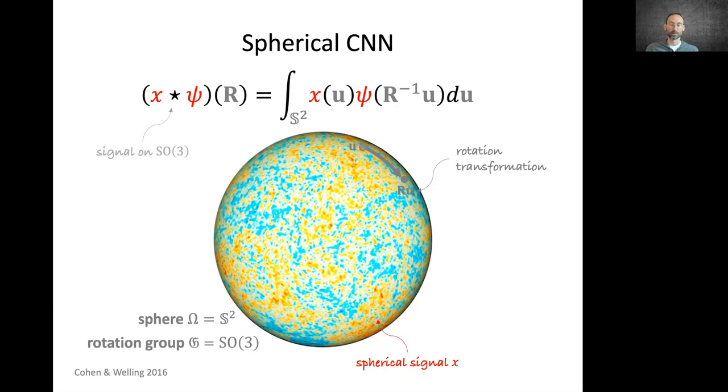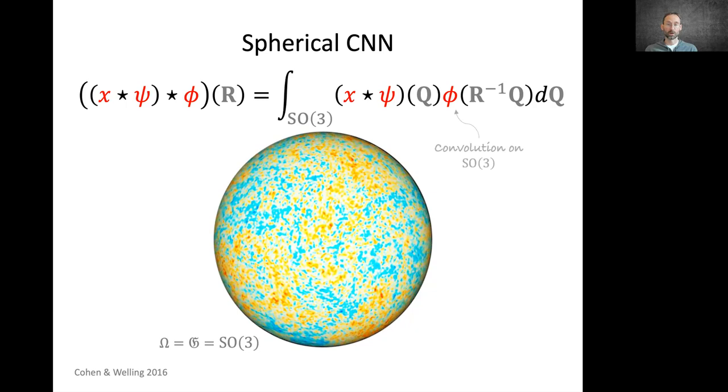As I said, this SO(3), it has a different structure, it's actually a three dimensional manifold, because on this sphere, we can rotate three ways, we can rotate along the parallels, along the meridians, and around itself. If you want to do another layer of convolution, we need to apply it now on SO(3), on the group. It's a three dimensional manifold where rotations themselves are points, I denote them by Q.